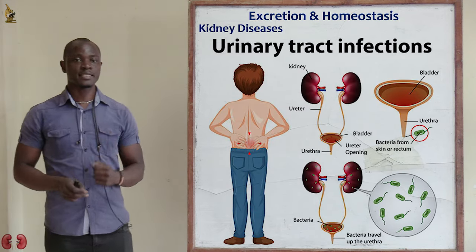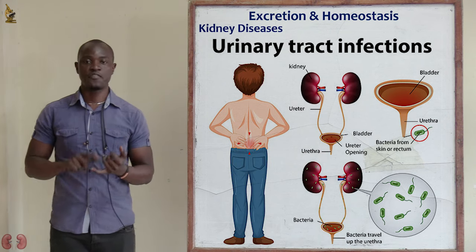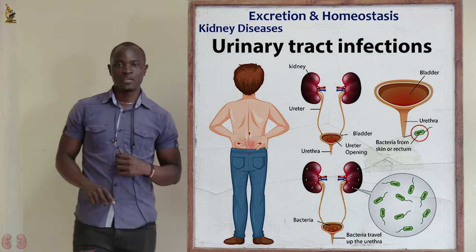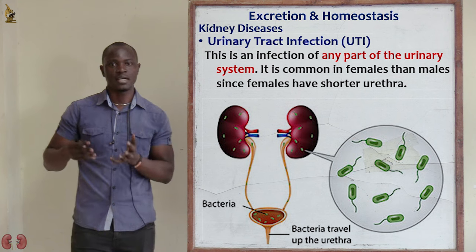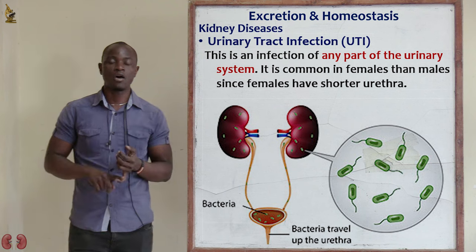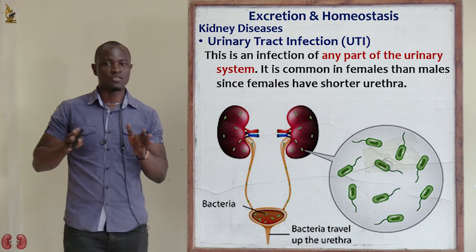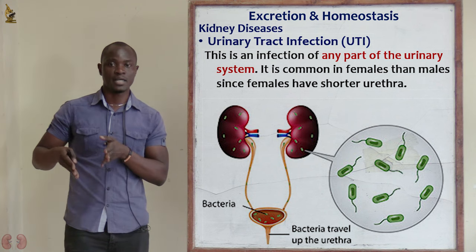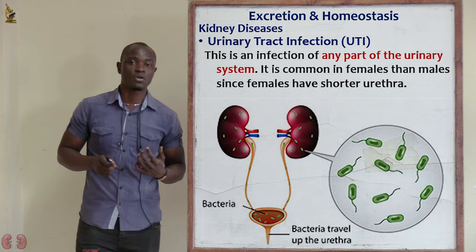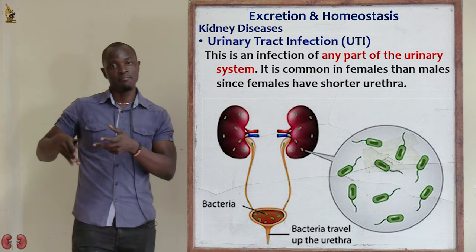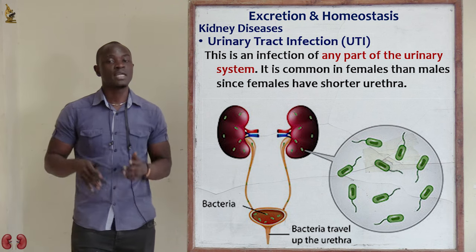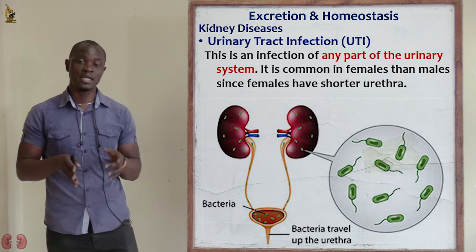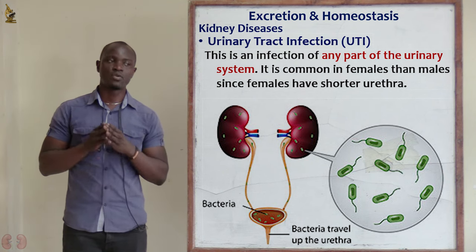The next disorder of the kidney is urinary tract infection, most commonly referred to as UTI. This is an infection of any part of the urinary tract system — that is either the kidney, the ureter, the bladder, or the urethra. UTI is most commonly found in females than in males — it is about 10 females to 1 male that get urinary tract infection.